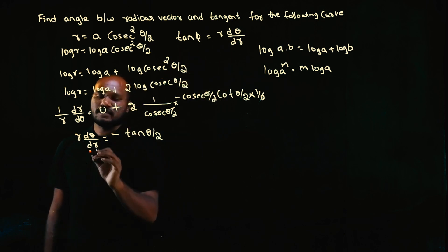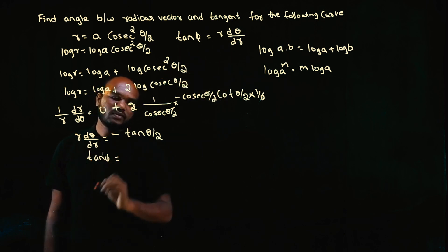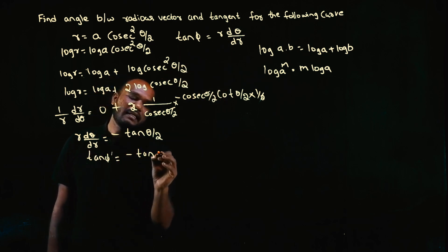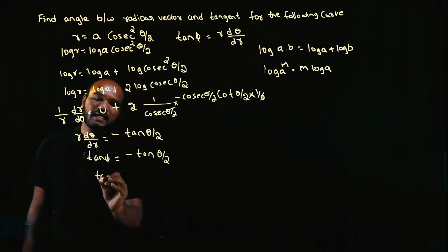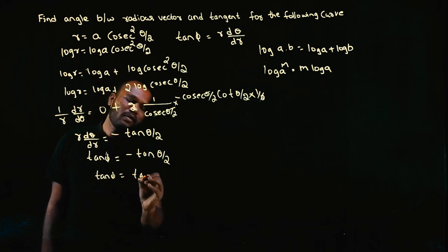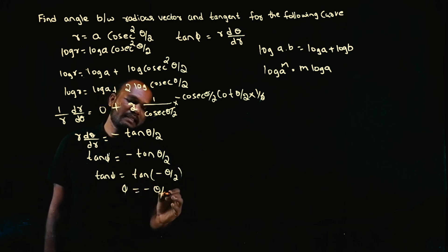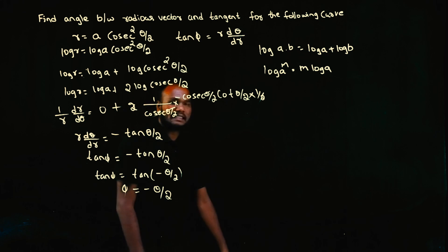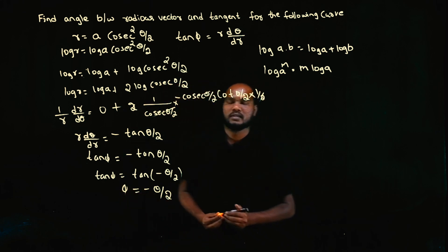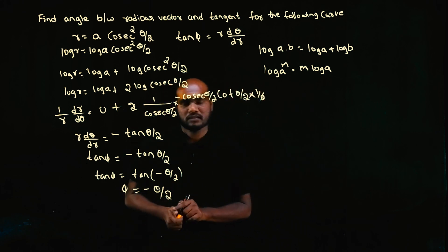r·(dθ/dr) is what? Tan φ. So tan φ equals -tan(θ/2). Tan φ equals tan(-θ/2). Since tan equals tan, we can equate the arguments. φ equals -θ/2. Simple, yes or no? Yes, okay.